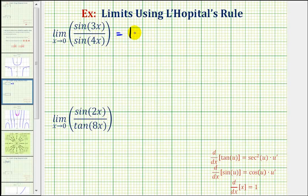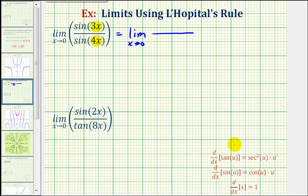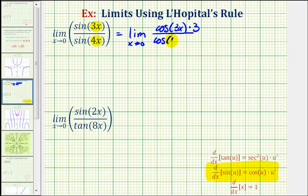This limit is equal to the limit as x approaches zero of the derivative of sine three x divided by the derivative of sine four x. Notice how our two functions are composite functions where three x and four x are the inner functions, so we'll use the chain rule. The derivative of sine three x equals cosine three x times three, and the derivative of sine four x equals cosine four x times four.